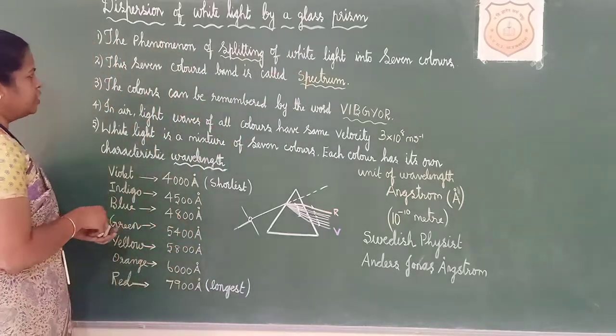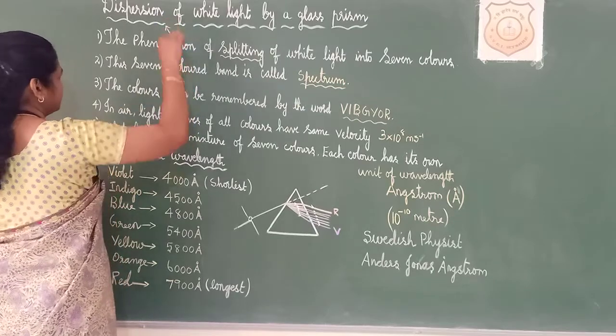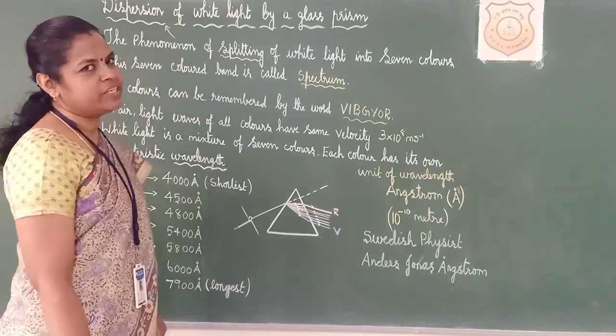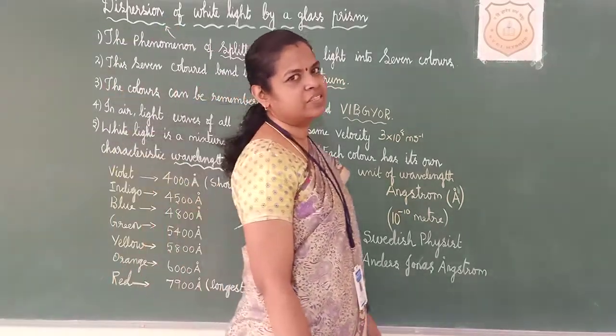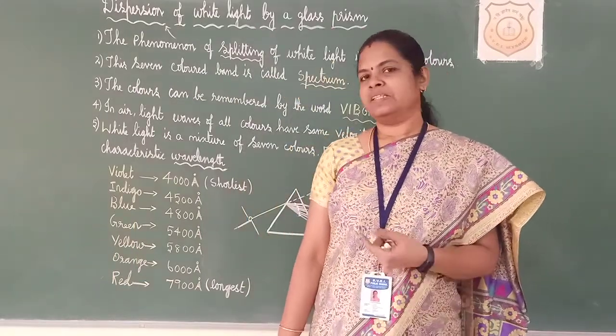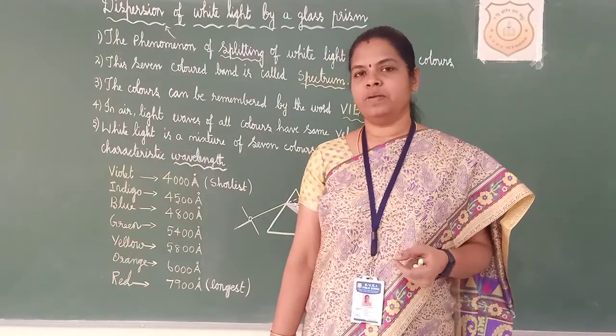Dispersion. The definition for dispersion is splitting of white colours into seven different colours. This definition is also very important.